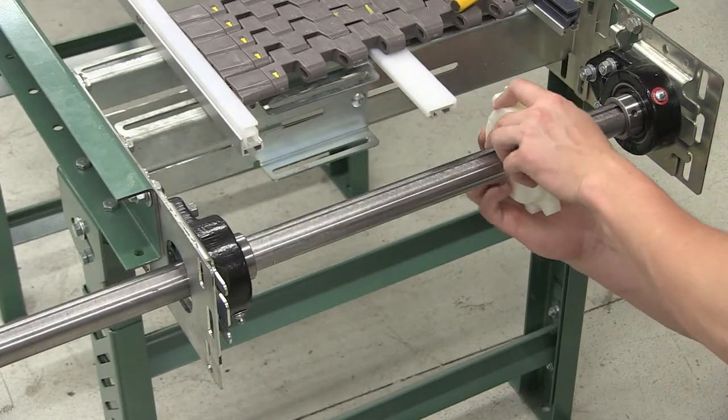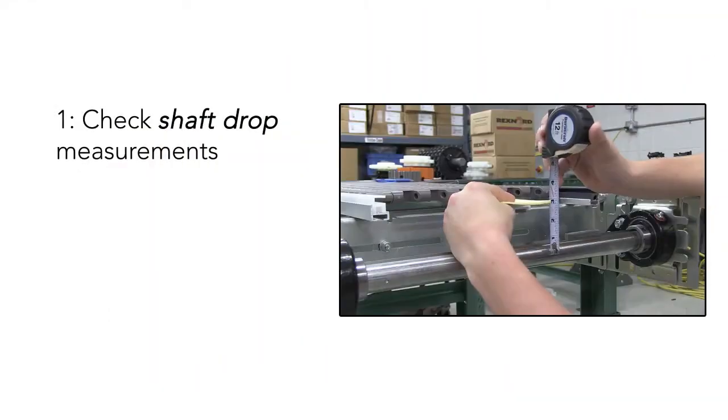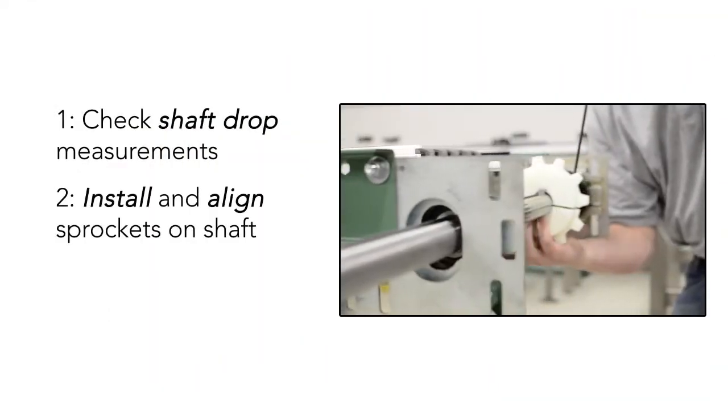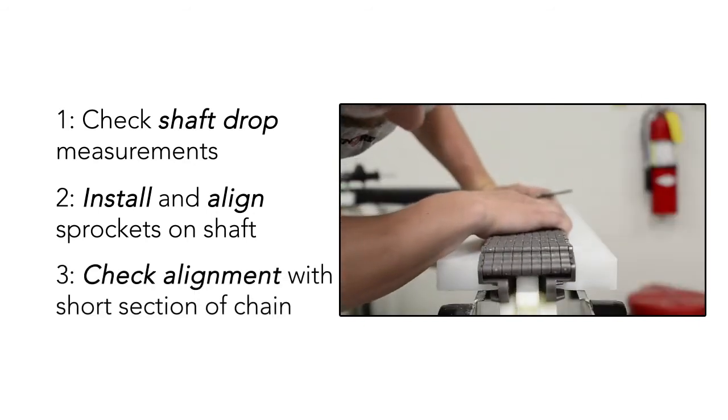Installation of any flat top sprocket can be done in three steps: check the shaft drop measurement, install and align sprockets on the shaft, and check alignment with a short section of chain.